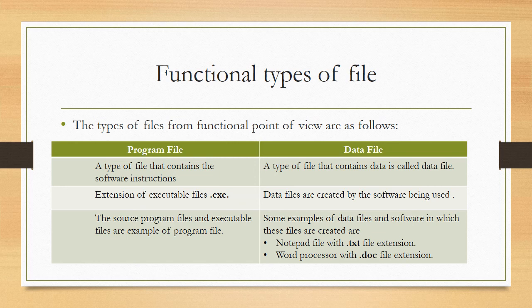In the program file you have stored a set of instructions, and in data files you have stored data. Data files are created by the software being used. When you use a software, you are creating data files. For example, if you are creating files in Notepad, the extension used is .txt — if you have created a file in Notepad and stored data in it, the file extension when saving will be .txt.